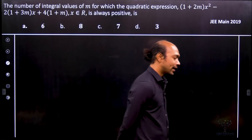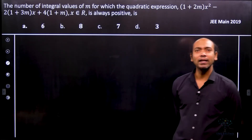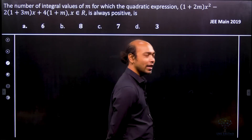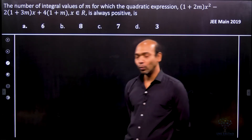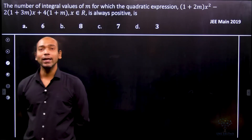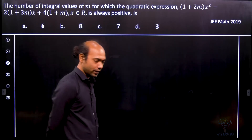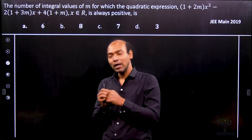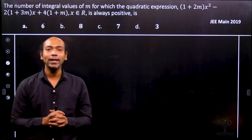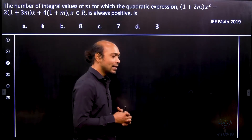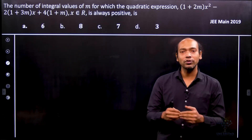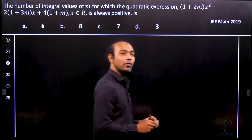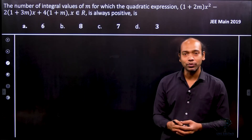Hi, in this problem, this appears in JEE Main 2019. The given function f(x) is always positive. When a quadratic equation is always positive, that means the equation is always above the x-axis, so the function doesn't cross the x-axis — therefore no real roots, meaning it definitely has complex roots.